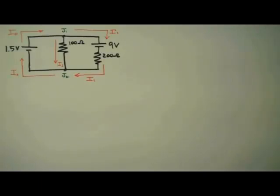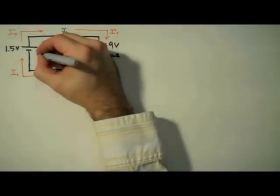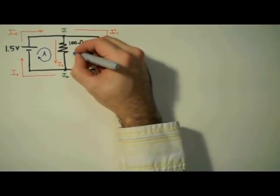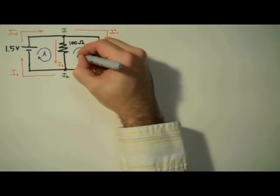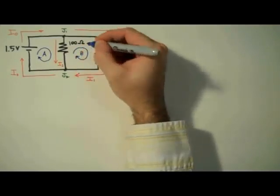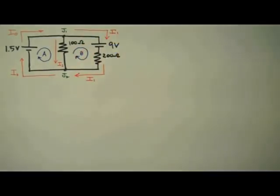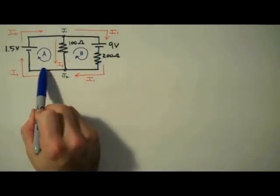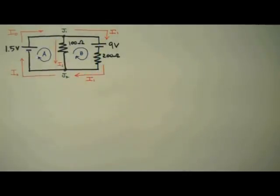Next, we label our loops. I'll label this loop A and this loop B. Just like the currents, the direction of your loops is arbitrary. And you can label this outer perimeter loop C if you'd like — I'm not going to. I anticipate we won't need it.